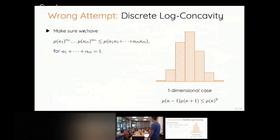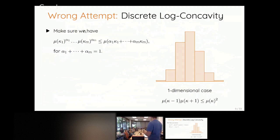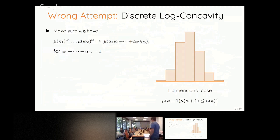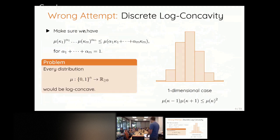Here is the wrong attempt: if you take the log-concavity definition from the continuous world and plug it into the discrete world, for any points kappa_1 through kappa_m and any values alpha_1 through alpha_m such that everything is an integer vector, this inequality should be satisfied. In the one-dimensional case, log-concave sequences have been studied and have nice properties. But for distributions on the hypercube, this inequality says nothing - every distribution would satisfy it. That class is too large to handle, so this is the wrong attempt.